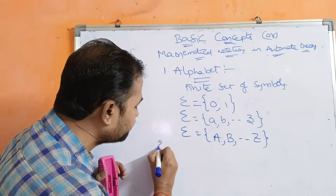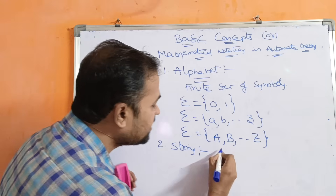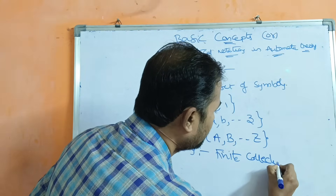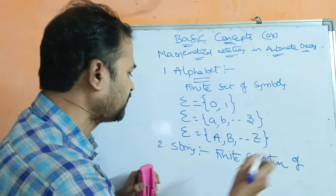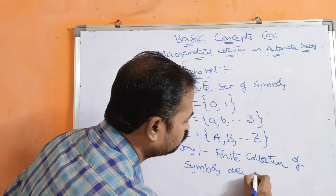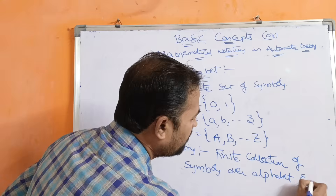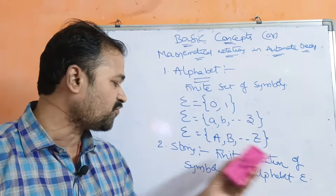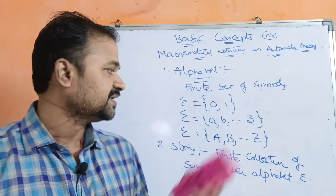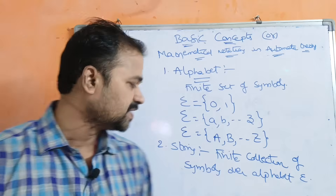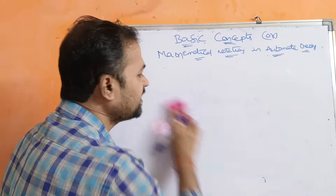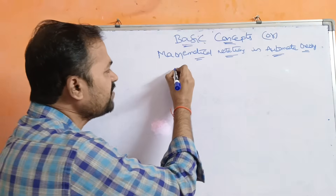Now let us see what a string is. A string is a finite collection of symbols over an alphabet — that is, a sequence of symbols generated from the alphabet sigma. A string is always represented by W.